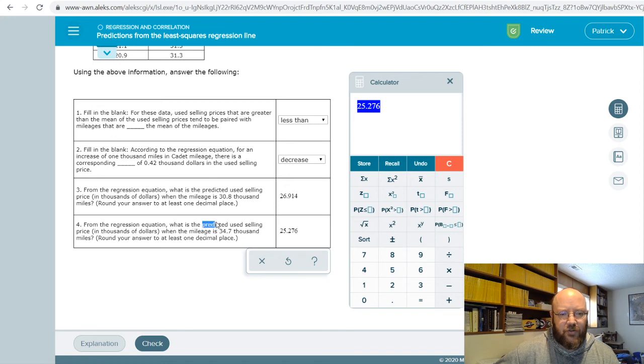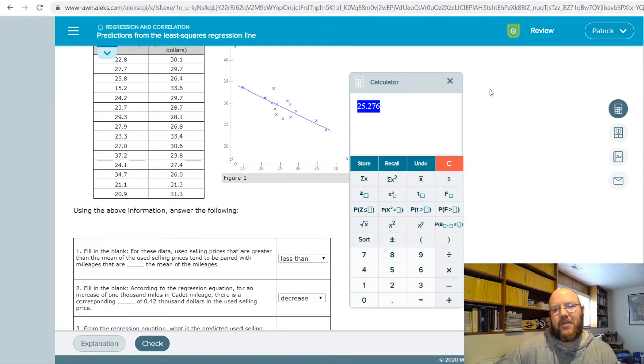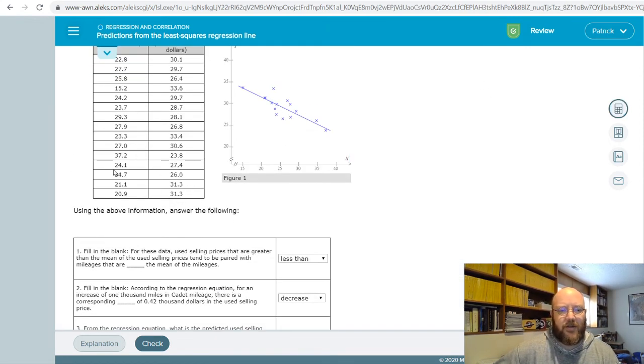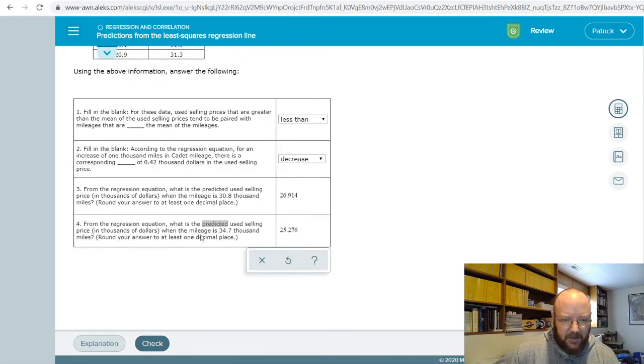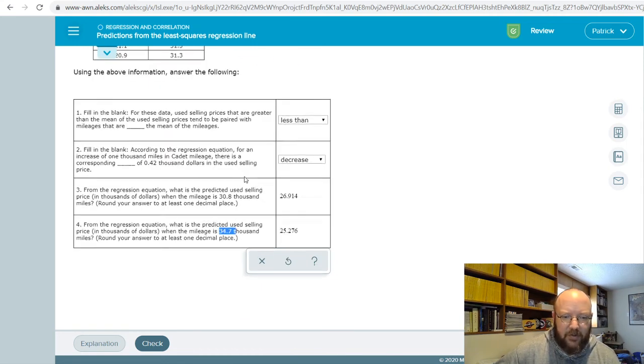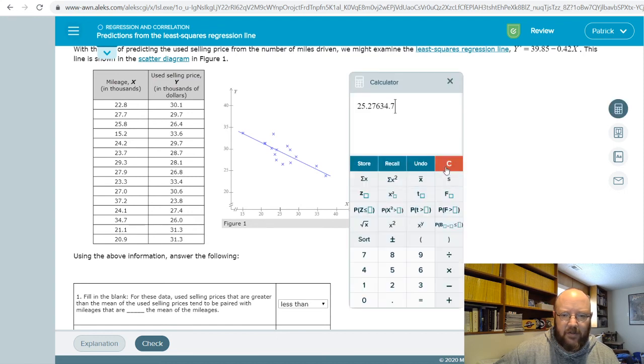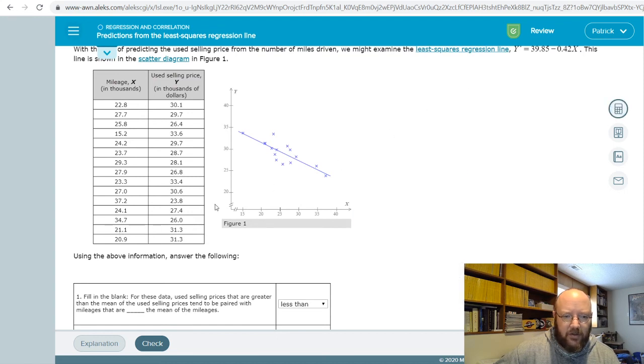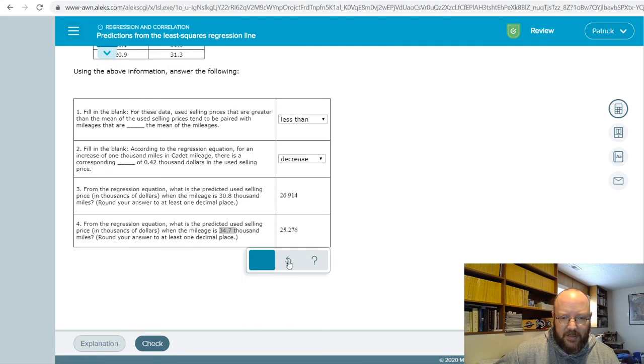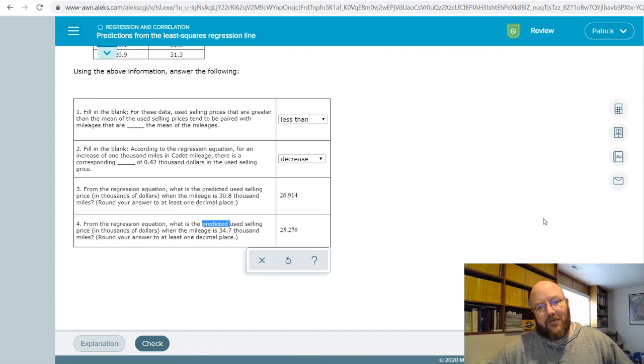And remember, if it asked you for the observed value, you just look it up in the table. Whatever the Y value corresponding with that one in the table is, which I'm kind of curious now. So 34.7 is this guy right here. So notice that the observed Y value is 26, but this one is 25. That's perfectly fine. Just be really careful whether or not it's asking you observed value or predicted value.